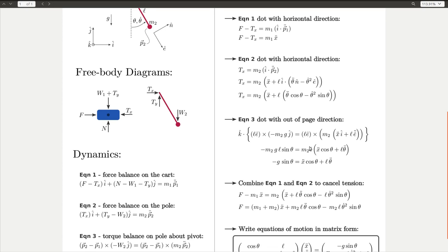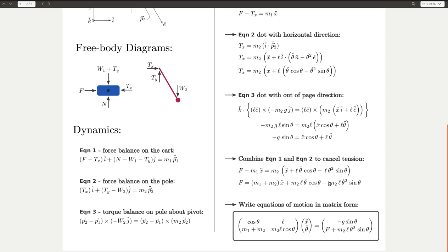Now we have three equations, three unknowns, and we want to get rid of t sub x because we don't really care what that is. So one easy way to do that is to take equation one, solve it for t sub x, and just plug it into the left-hand side of equation two. And that's what I've done here. And then I've just expanded out some terms to see how things are related to each other.